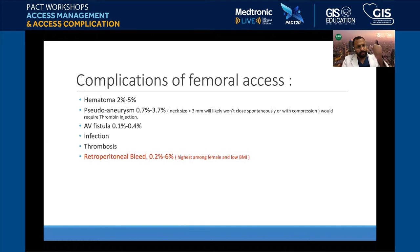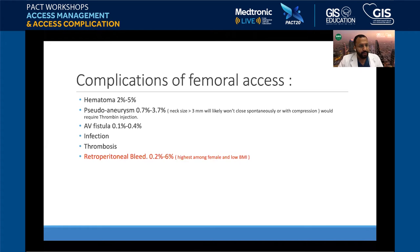AV fistula can happen if you transfix a vein over the artery. Ultrasound shows the vein next to the artery — in some anatomies the vein is on top of the artery, requiring a side stick to avoid it. Infection is important; some advocate sterile technique when removing the sheath — I use non-sterile gloves compressing with a sterile gauze. Femoral thrombosis almost never happens because it's a large vessel with high flow, unless there is pre-existing stenosis or thrombophilia. What worries every interventionist most is retroperitoneal bleed.